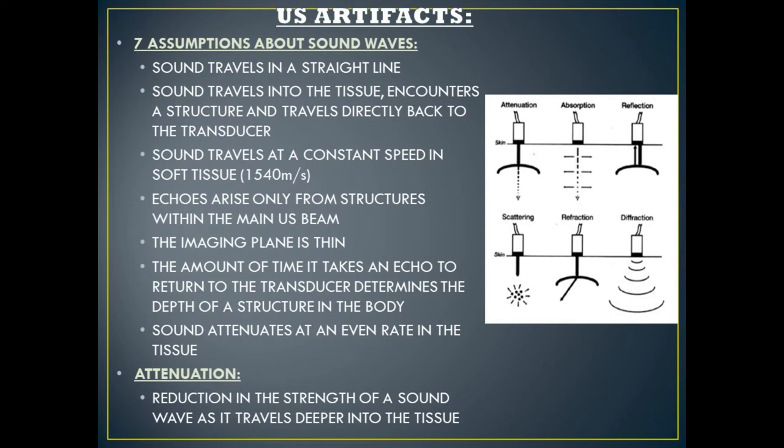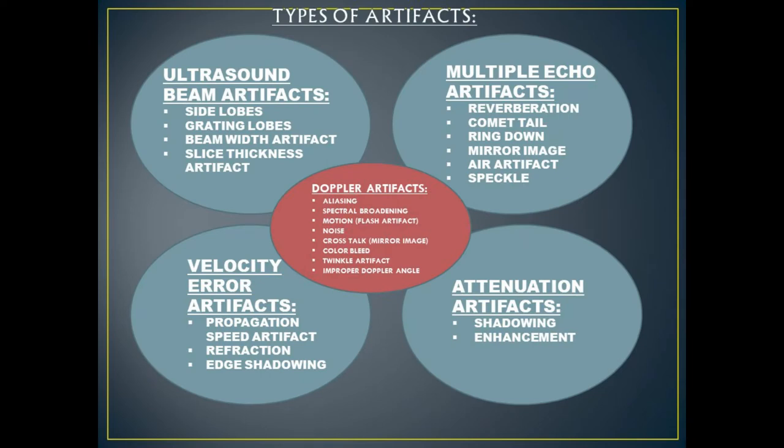When any of these assumptions fails to occur, an ultrasound artifact is formed. Today, we're going to talk about velocity error artifacts. There are five categories of artifacts: ultrasound beam artifacts, multiple echo artifacts, velocity error artifacts, attenuation artifacts, and Doppler artifacts.